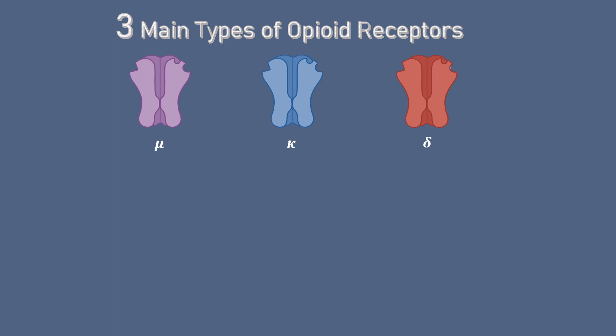These receptors have similar but slightly different effects from one another. The natural purpose for these receptors are to bind to endorphins, enkephalins, and dinorphins, which can be thought of as natural painkillers produced by our body.